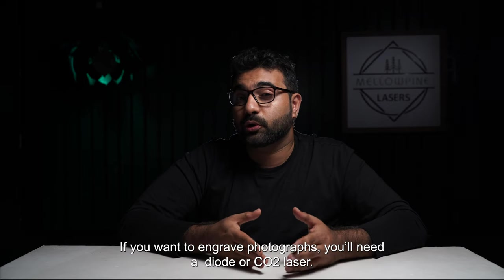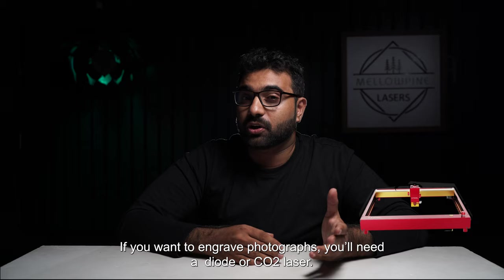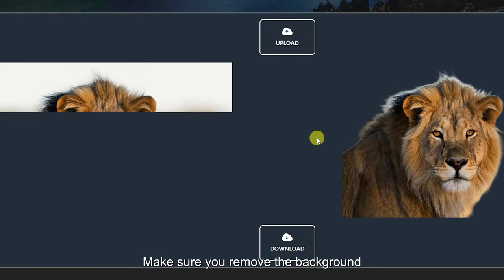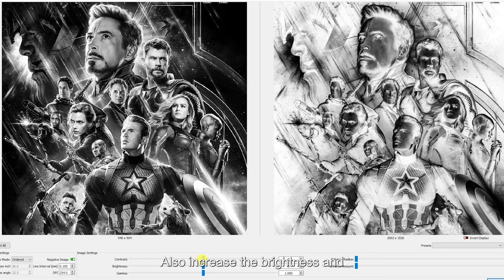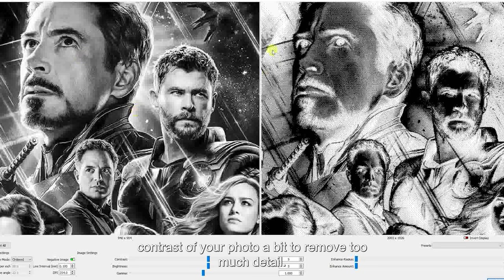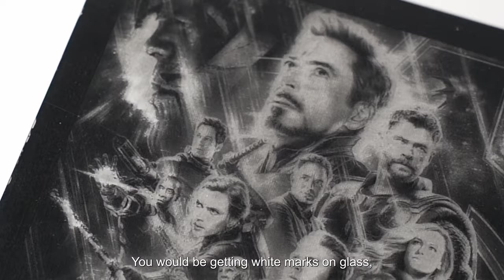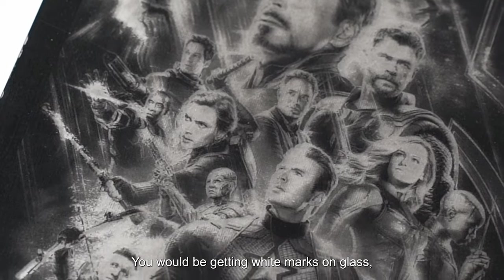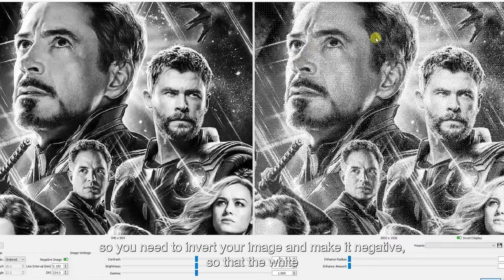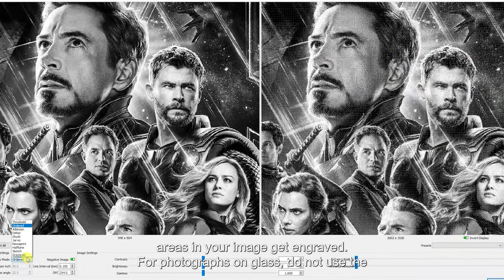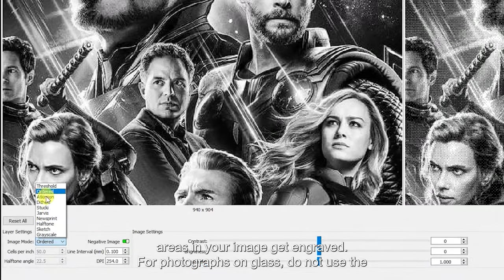If you want to engrave photographs, you'll need a diode or a CO2 laser. Make sure you remove the background or use an image with a light background. Also increase the brightness and contrast of your photo a bit to remove too much detail. You would be getting white marks on glass, so you need to invert your image and make it negative so that the white areas in your image get engraved.